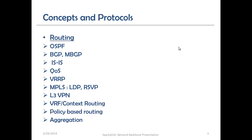The first concept to consider is routing, which is a very big industrialized protocol that has different versions and types. As you can see, we have OSPF — the Open Shortest Path First protocol — the Border Gateway Protocol which is BGP and MBGP, and we have ISIS, the Intermediate System to Intermediate System protocol.